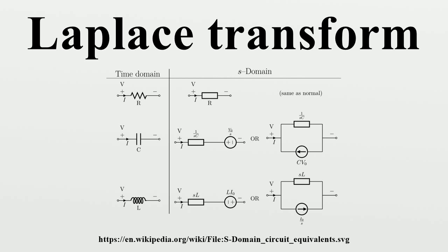In general, the region of convergence for causal systems is not the same as that of anti-causal systems. The Laplace transform is often used in circuit analysis, and simple conversions to the S-domain of circuit elements can be made. Circuit elements can be transformed into impedances, very similar to phasor impedances. Note that the resistor is exactly the same in the time domain and the S-domain. The sources are included if there are initial conditions on the circuit elements — for example, if a capacitor has an initial voltage across it, or if an inductor has an initial current through it, the sources inserted in the S-domain account for that. The equivalents for current and voltage sources are simply derived from the transformations in the table.